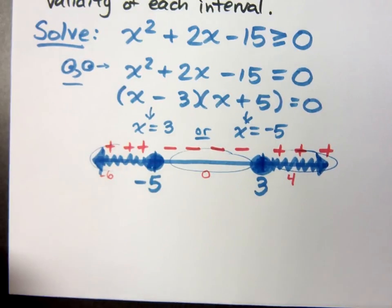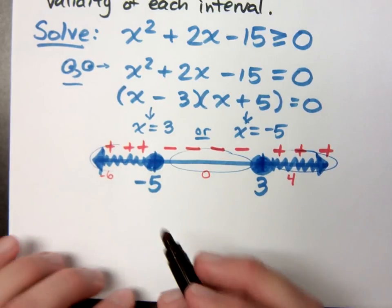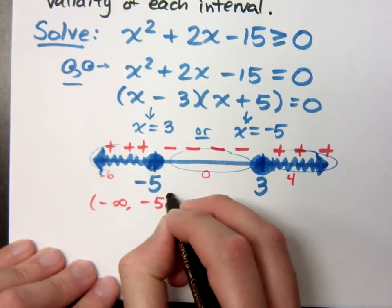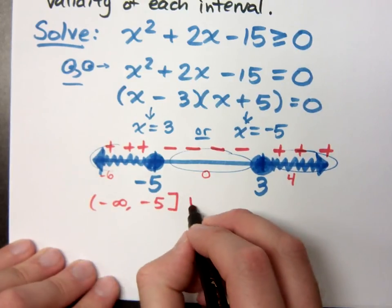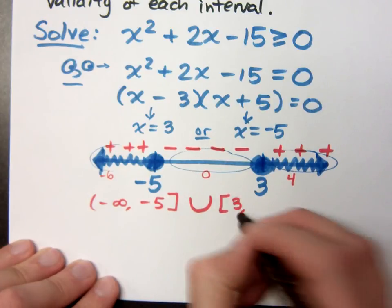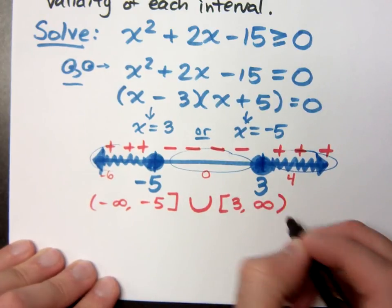So this is how my graph looks and my interval notation is just from negative infinity to negative 5 with a bracket, and I use this union symbol to join it with the other interval from 3 to infinity.